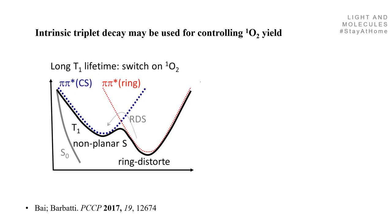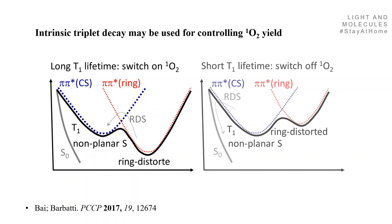The intrinsic triplet decay may be used to control the singlet oxygen yield. Imagine two situations. In the first, the ring-distorted minimum is much lower than the non-planar minimum, making the passage between minima the rate-determining step. In the second, a more stable non-planar minimum makes the intersystem crossing the rate-determining step. In the first case, I have a long T1 lifetime that switches on singlet oxygen; in the second, a short T1 lifetime that switches off singlet oxygen because there is no time to form it.